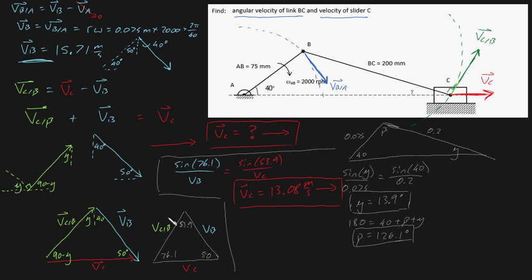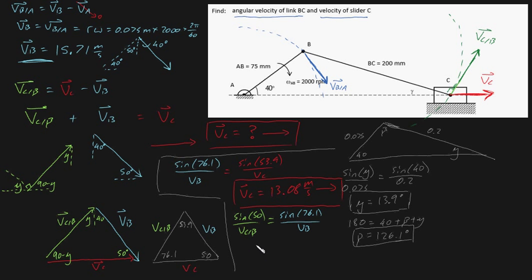Now let's find VCB. Using the sine rule again: sine of 50 divided by VCB is equal to sine of 76.1 divided by VB. Plugging that into the calculator, VCB must be equal to 12.4 meters per second in the direction we already identified.